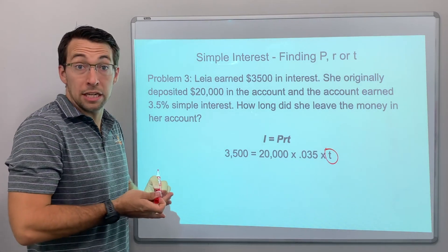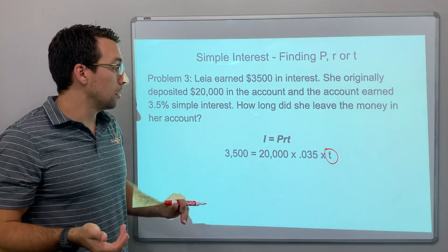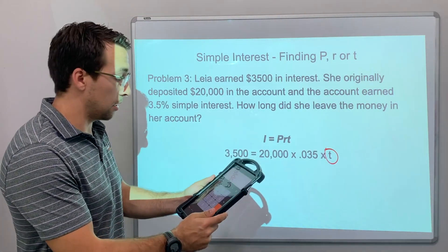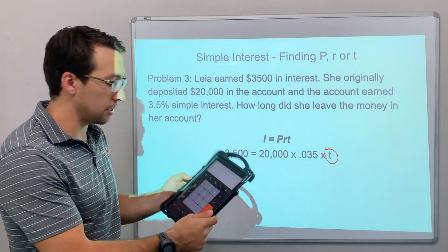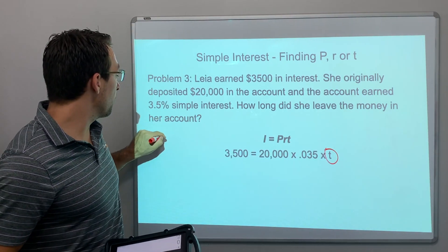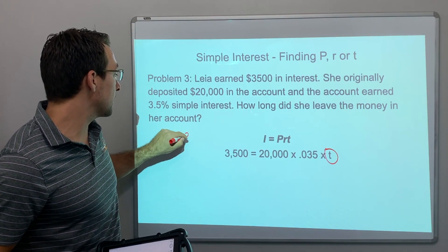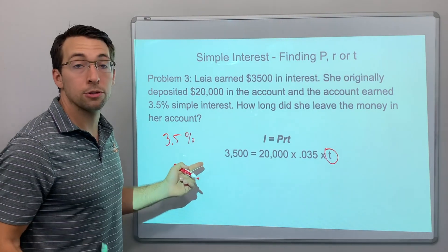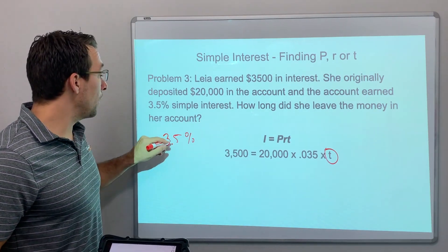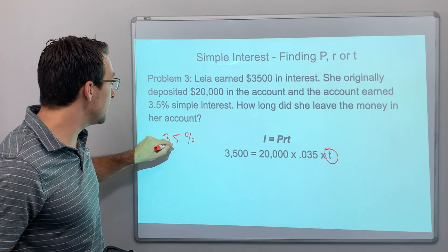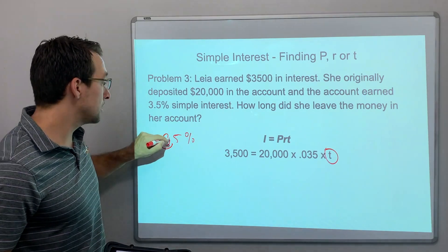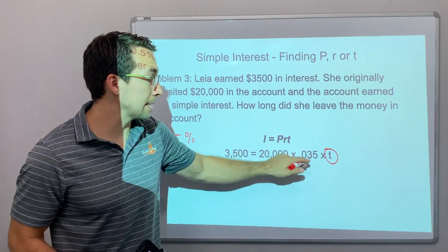How many years did she have the money in the account? At this point in the year, your teacher has allowed you to use calculators, so let's use a calculator. What is 20,000 times .035? We know percentages are out of 100 — the hundredths place, which is two decimals. So when taking a percentage to a decimal, you move the decimal two places, and that gives us .035. That's how we got our rate.